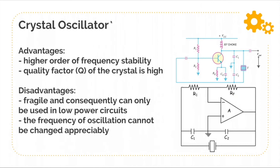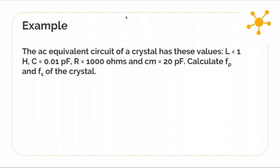The second disadvantage is that the frequency of oscillation cannot be changed appreciably. Since the frequency output of a crystal oscillator is very stable, we cannot simply change the value of the oscillation frequency unlike with an LC circuit, where we can use variable capacitance components or change the number of turns in an inductor.